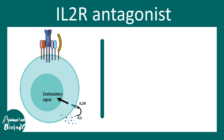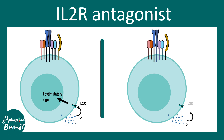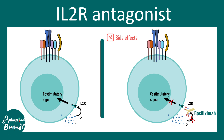Autoreactive T cells harm the body in autoimmune conditions. Antibodies such as basiliximab can bind to the interleukin-2 receptor and prevent normal interleukin-2 from interacting with it, so the co-stimulatory signal is not transmitted and T cell activation is blocked. This therapy does have side effects including edema, hypertension, and tremor, but it is a potent therapeutic approach.